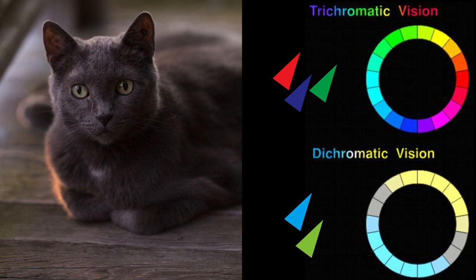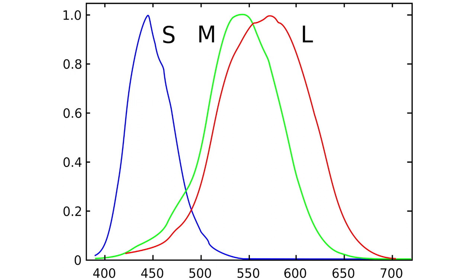Cats are like most mammals in that they are dichromats, meaning their color vision is due to the interaction of two different types of cones in the eye. Humans and many other primates are trichromats, meaning we have three different types of cones. We can characterize these as short wavelength cones or S cones, medium wavelength M cones, and long wavelength L cones. From this chart, each type of cone is most responsive to certain wavelengths. A simple way to think of this: we have blue cones, green cones, and red cones — RGB. We don't have cones that see a particular color like yellow directly, but through the combination of response in the green and red cones, our brains can interpret that as yellow.